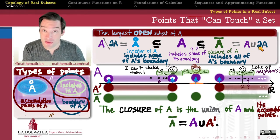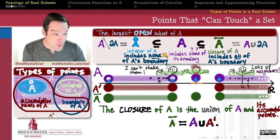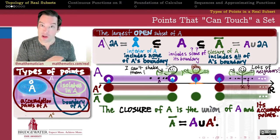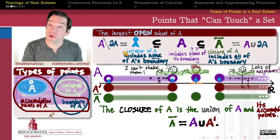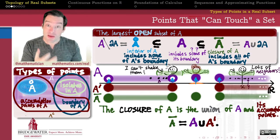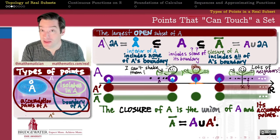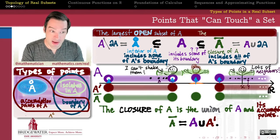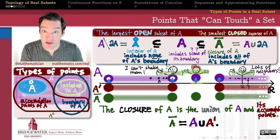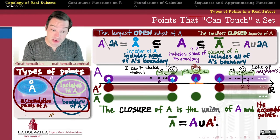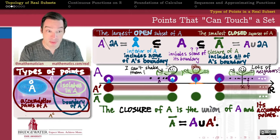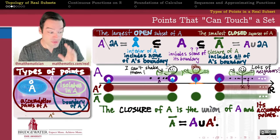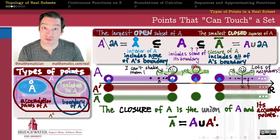This gives us the spectrum between open and closed in terms of how much of the boundary is contained. If we remove all boundary points from A, we get the interior of A — the largest open subset. If we include all boundary points and add them to A, we get the closure of A — the smallest closed superset. In the next video, we'll write down the formal definition of a closed set and use it to prove some topological properties.